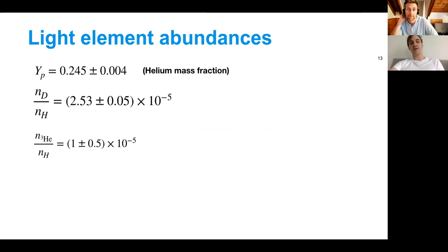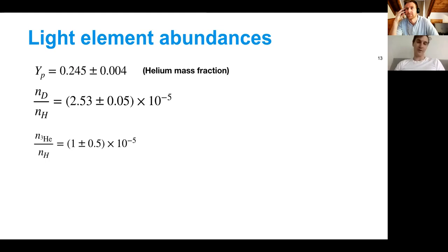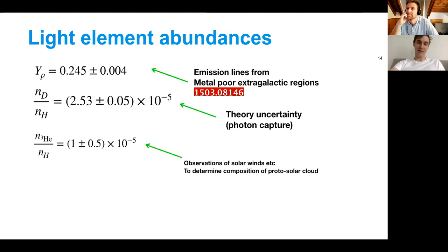In terms of observables for constraining, you have the helium mass fraction Yp, the deuteron ratio, and the helium-3 abundance. Yp is the fraction of the baryons which end up in helium — roughly 25% of your baryons end up in helium. The errors on Yp come from: emission lines in metal-poor galaxies, a theory uncertainty, and observations of solar winds.